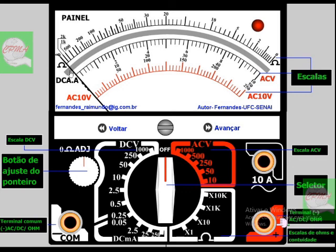E aqui, nesse local, entre a escala de OMS e a escala de DCA, tem um espelho. Esse espelho não é pra ver a cor dos teus olhos, mas sim para corrigir um erro chamado erro de paralaxe.